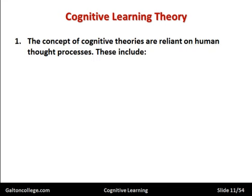Cognitive learning theories are reliant on human thought processes. These are inside our heads — this is how we try to make sense of the world, how we take in information and try to make sense of it. We take in data, then refine it in our heads and turn it into information — turn it into what we understand.